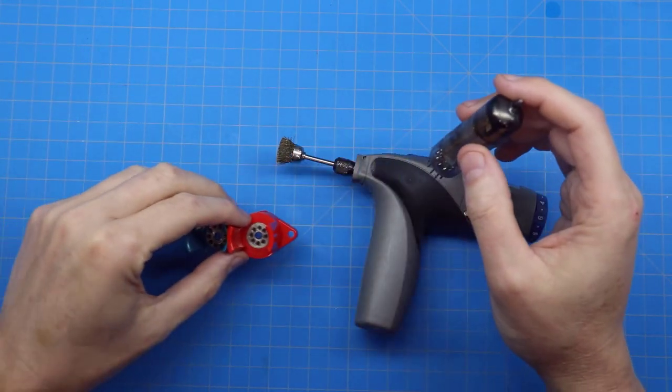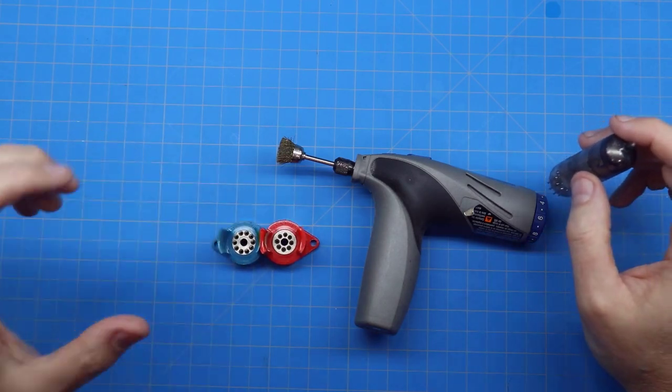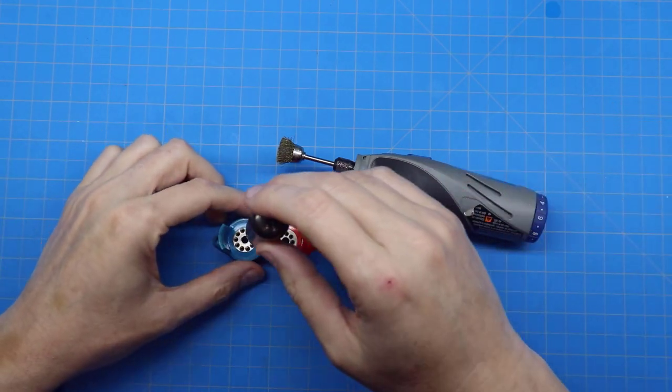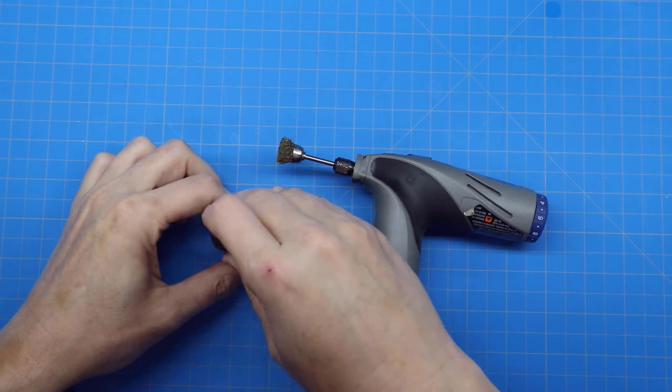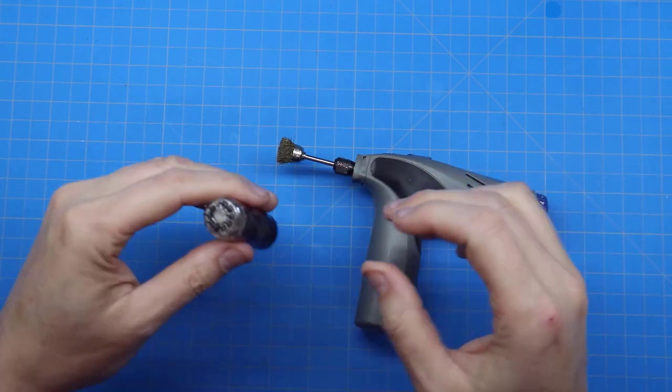Before I get started, I typically like to use a tube pin straightener. I keep one of these mounted on the bench over here on the side, and I just push the tube down in there, make sure all the pins are straight before I clean them.